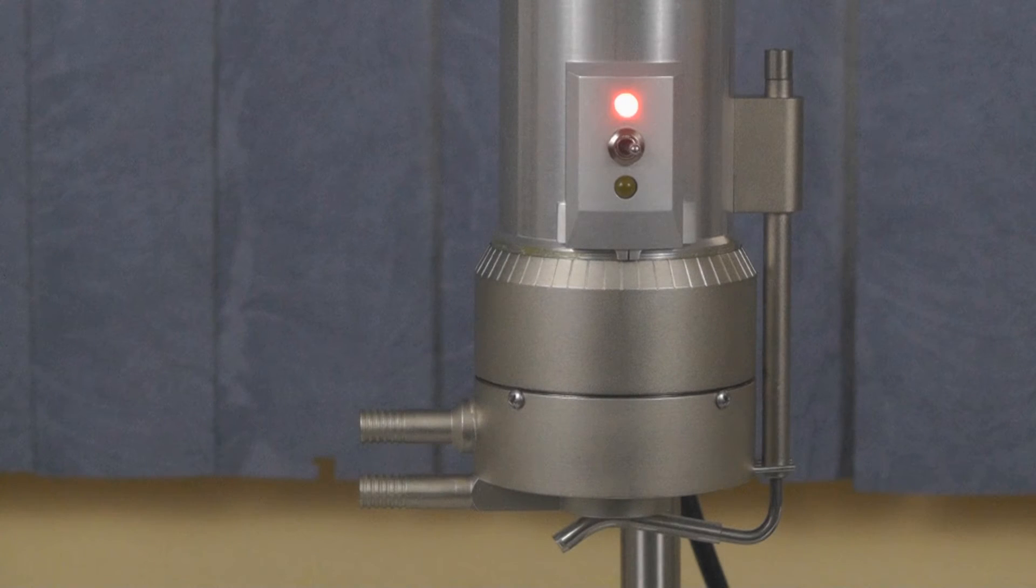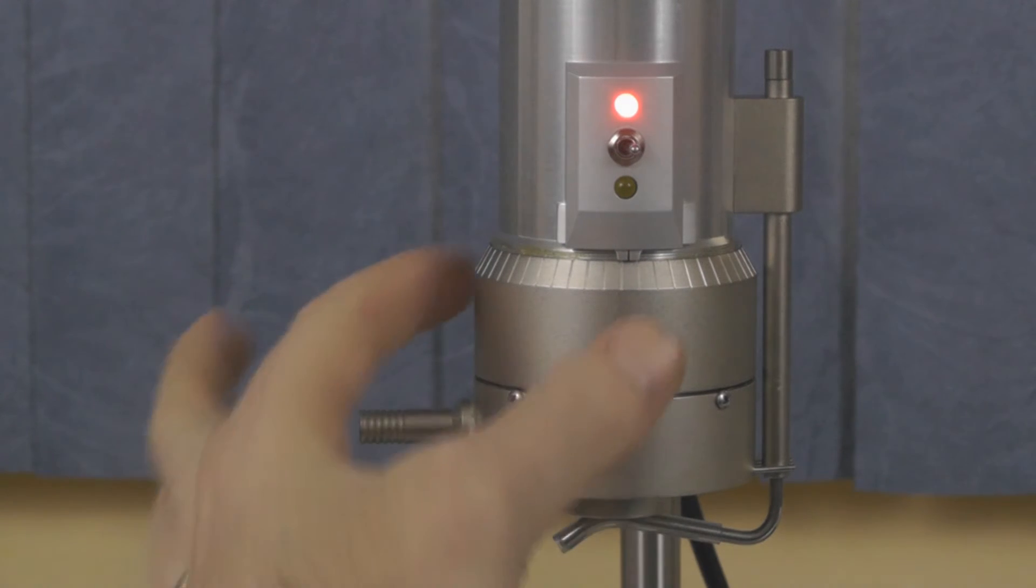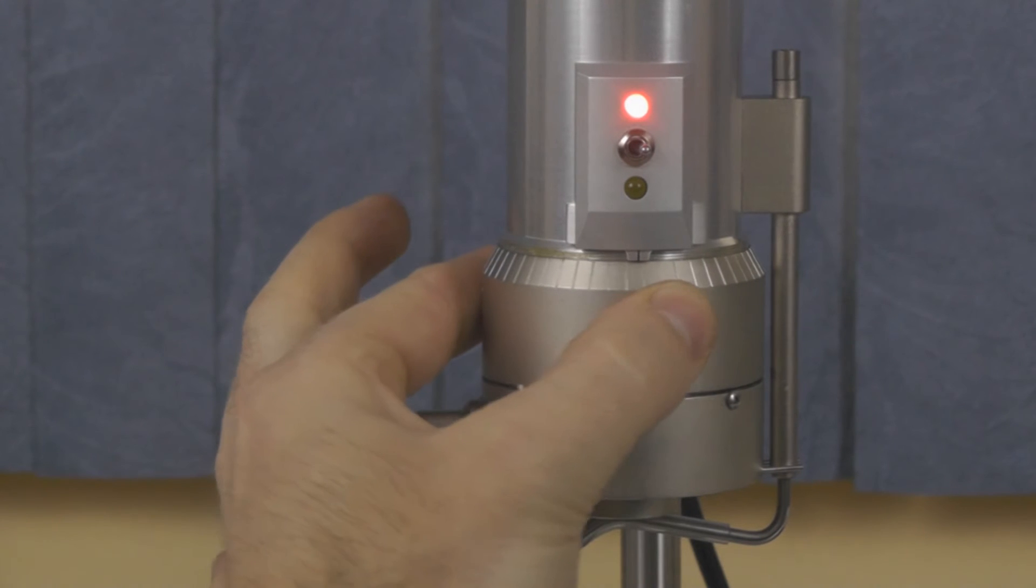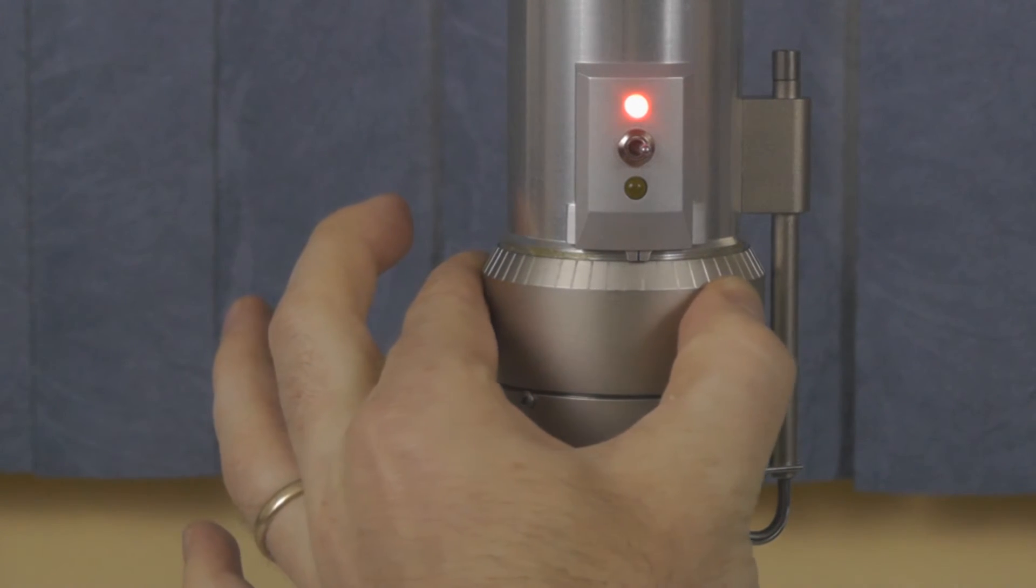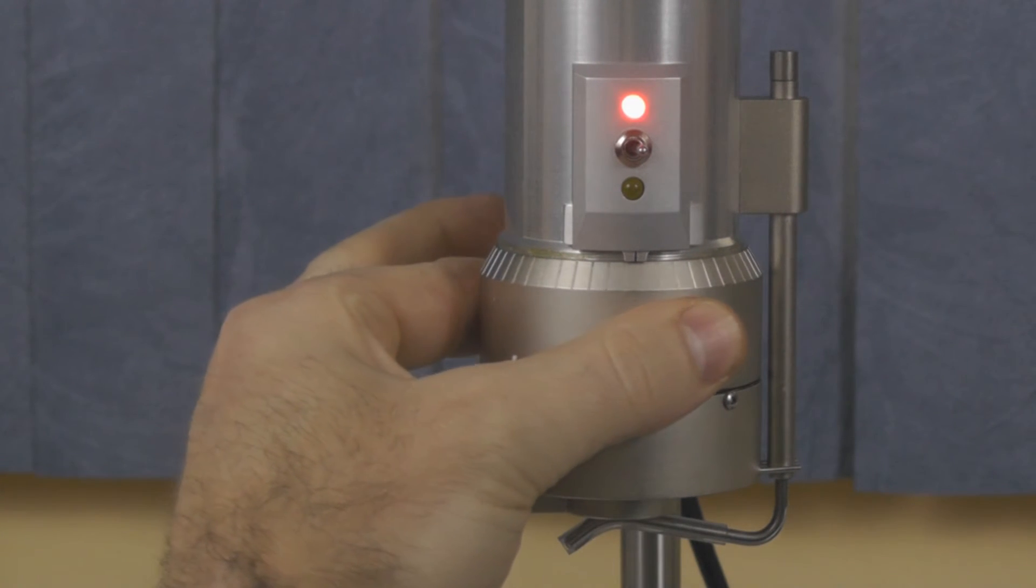When the sample cup is secured and the yellow light is off, you can now set the gap. Slowly move the micrometer counterclockwise until you see the yellow light appear. This point where the spindle first touches the sample cup and completes the circuit is known as the hit point.